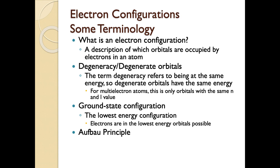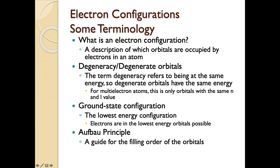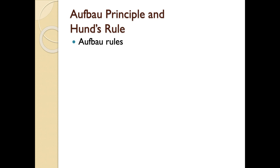The Aufbau Principle is just a set of rules to help you figure out how to fill your orbitals with electrons. It takes the Pauli exclusion principle as part of it and also includes Hund's Rule. The filling order is based on energy — we start at the lowest energy orbital possible, put as many electrons in it as we can, then go to the next lowest energy orbital and repeat. The 4s orbital is usually lower in energy than 3d, and the same anomaly occurs between 4f and 6s.